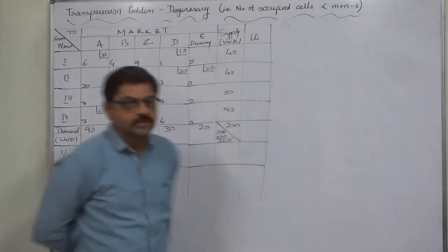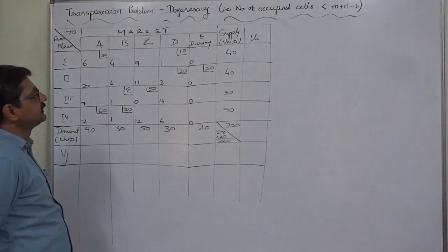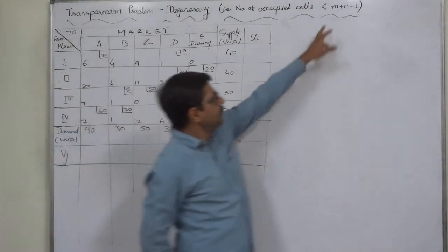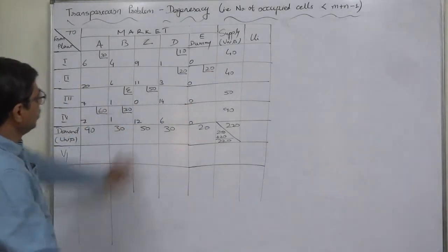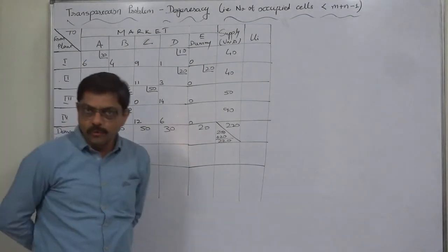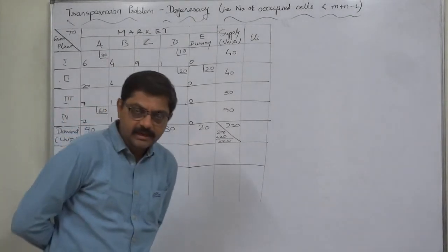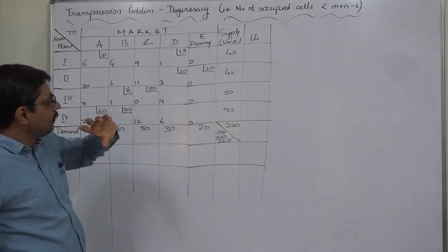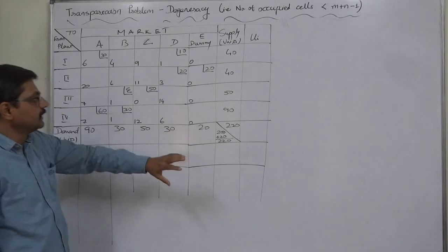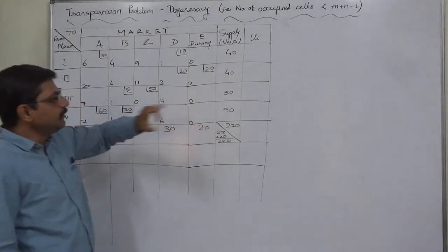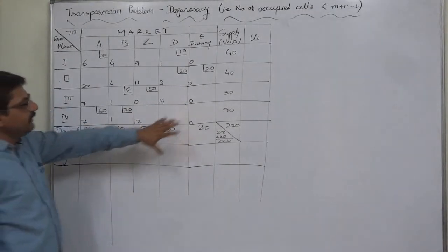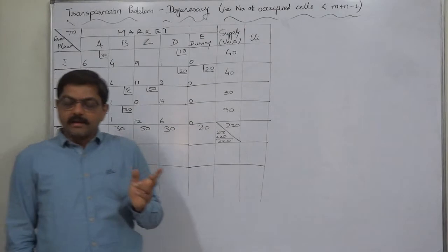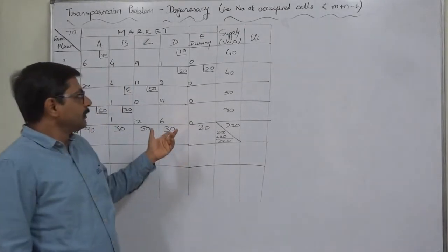Welcome back to Part 3 of the solution of a transportation problem with degeneracy. The number of occupied cells at the initial stage are less than M plus N minus 1, meaning the RIM condition is not satisfied. Here there are 5 columns and 4 rows, so at least 8 cells must be occupied, but in the initial stage there were only 7. In Part 1 we discussed the situation of degeneracy and how to overcome it by selecting one or more required cells to treat them as deemed occupied cells. Only then can we write the UI and VJ values, calculate DIJ values, and arrive at a conclusion whether the solution is optimal or not.